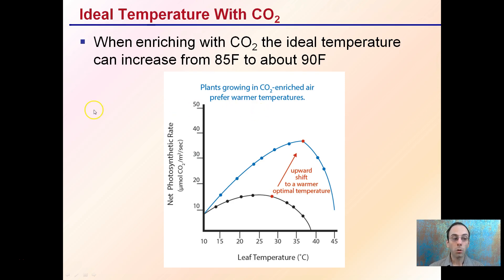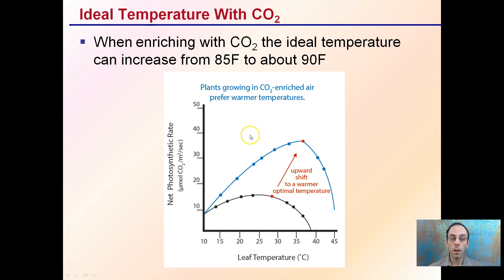The ideal temperature with CO2: when enriching with carbon dioxide, the ideal temperature can increase from 85 degrees Fahrenheit to about 90. Above 90°F we'll start to see a decrease in the photosynthetic rate. That increased carbon dioxide allows us to run our plants a little bit warmer, take advantage of potential heat that we may be trying to exhaust anyway, and increase plant production.